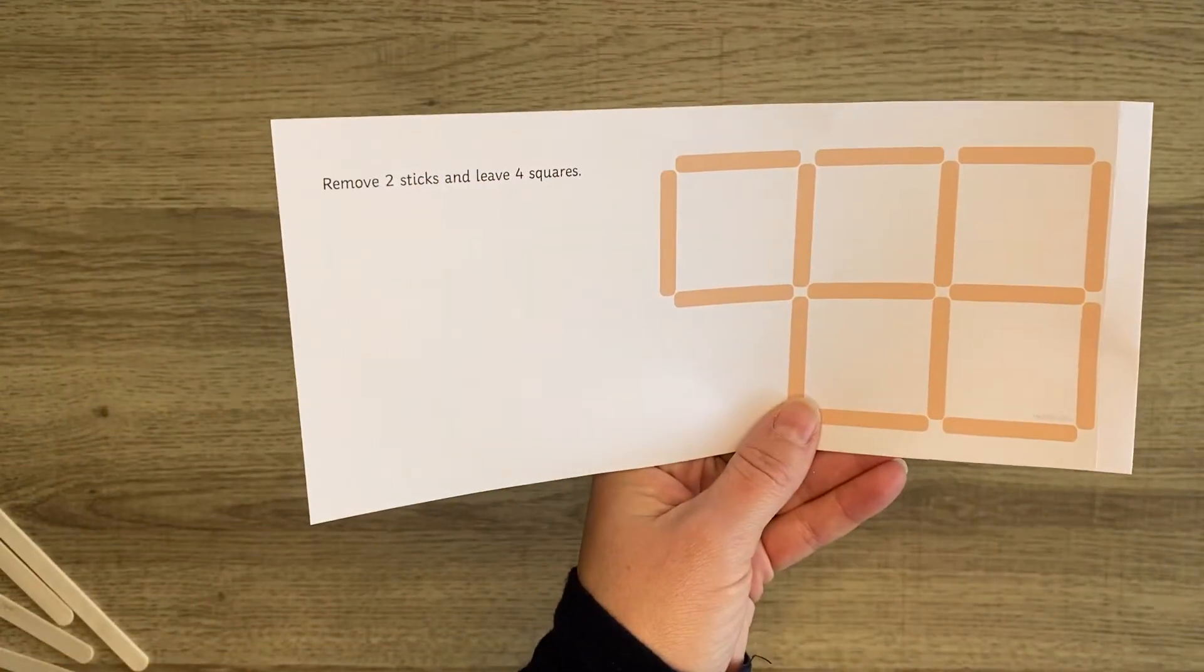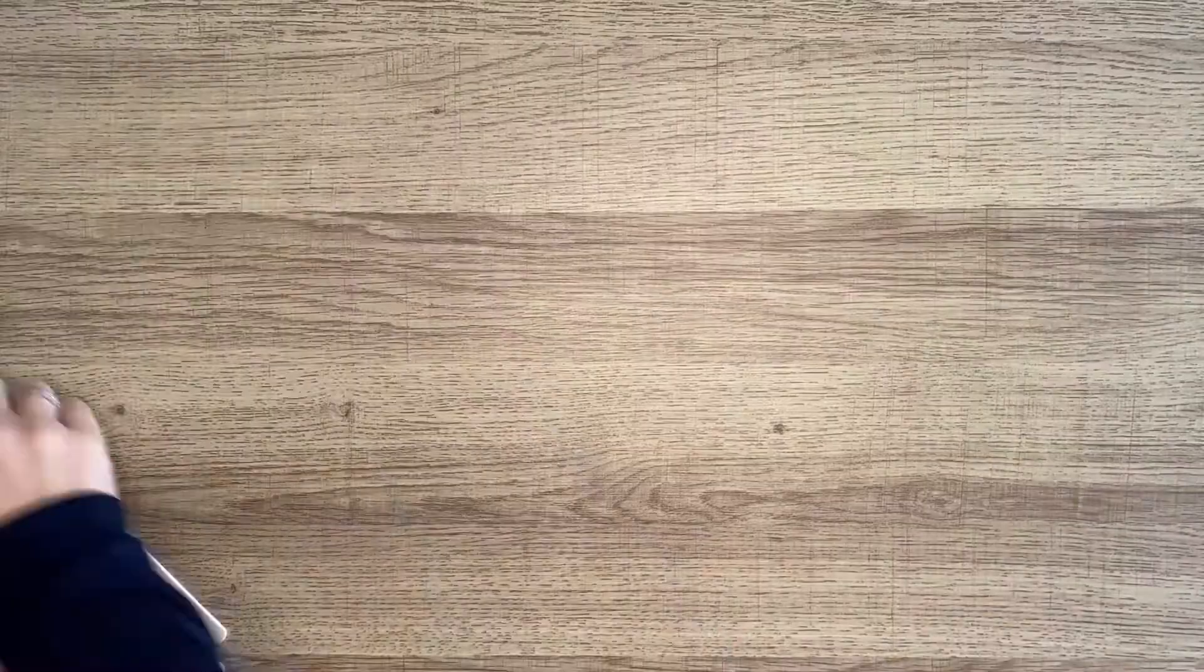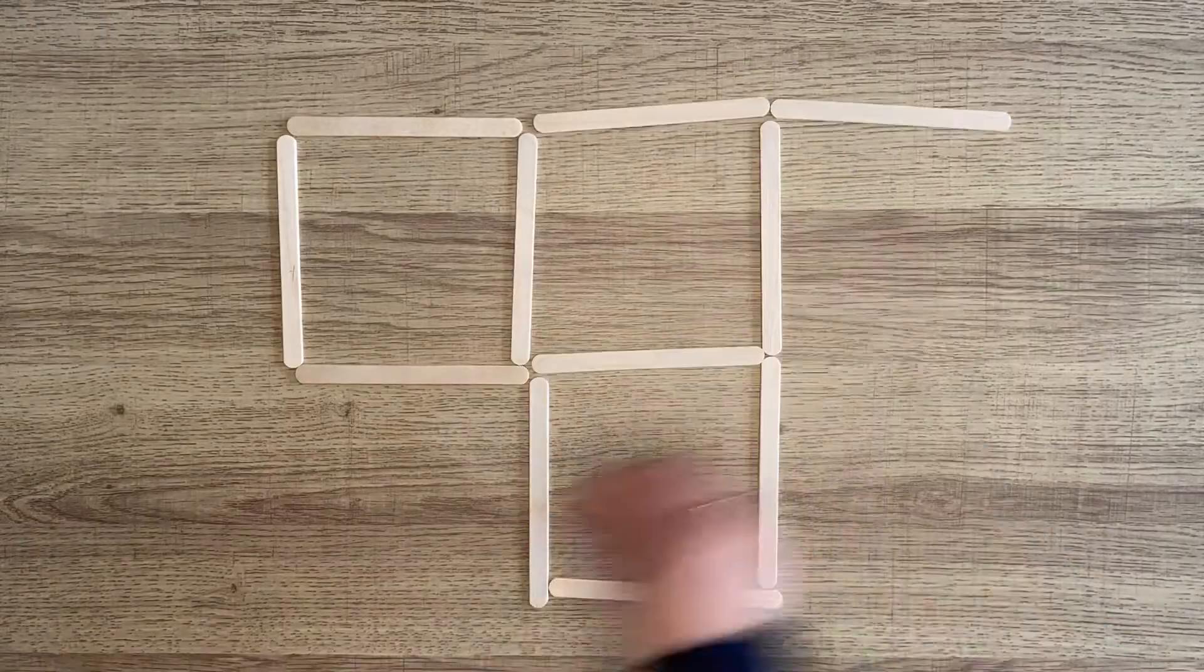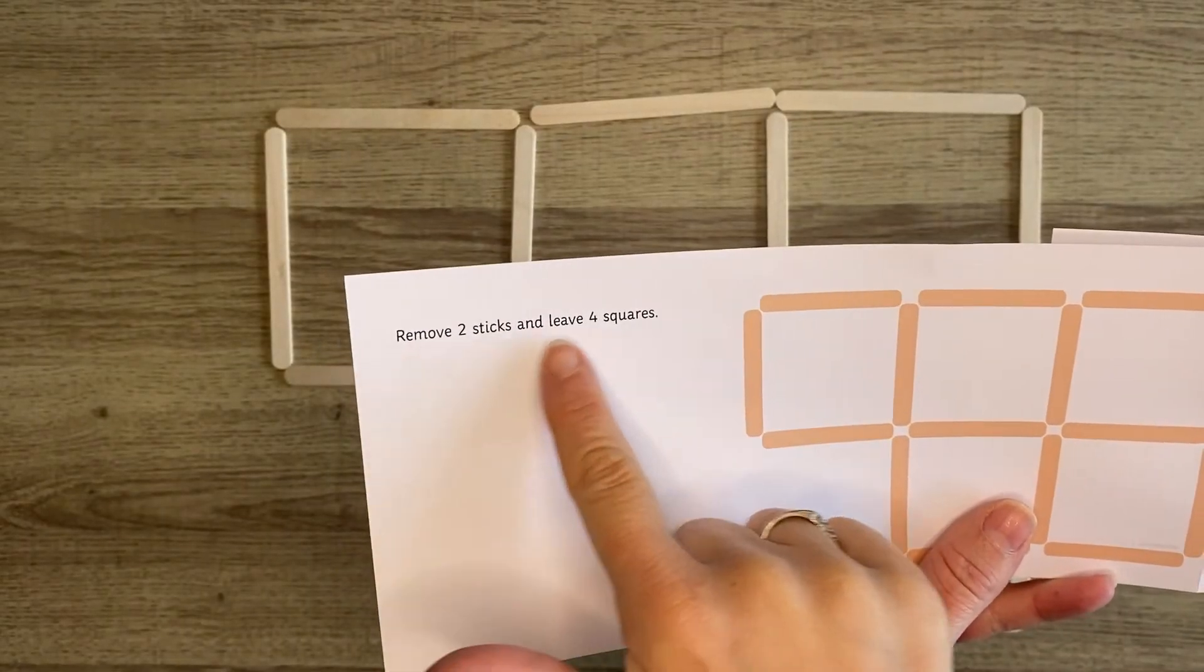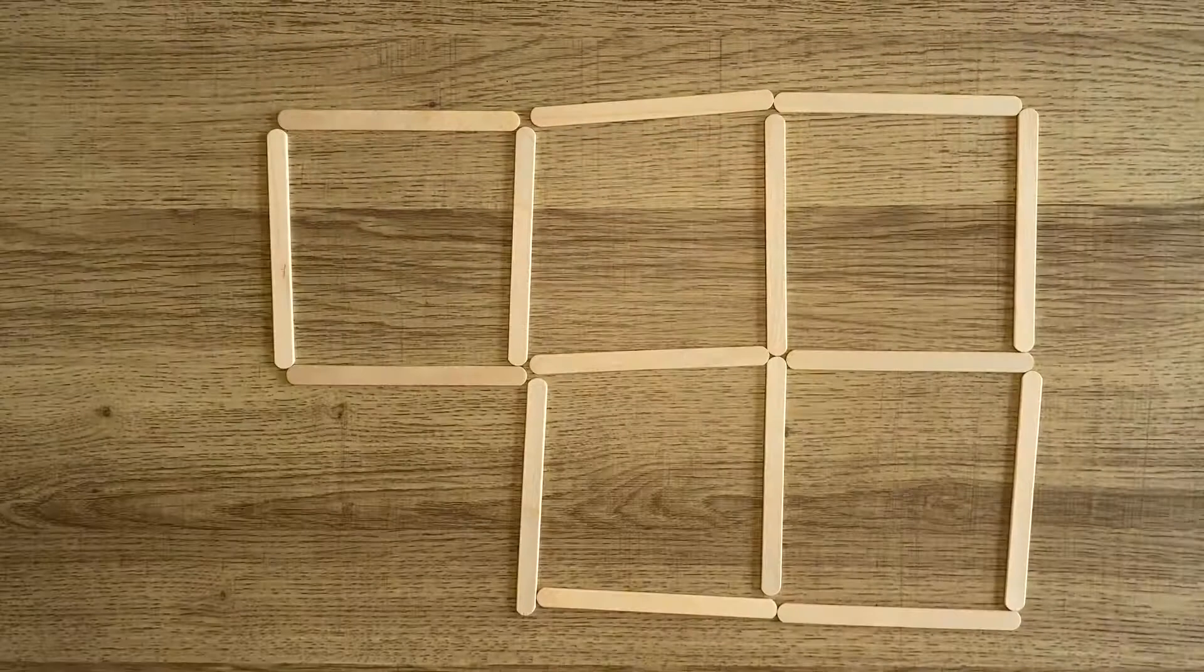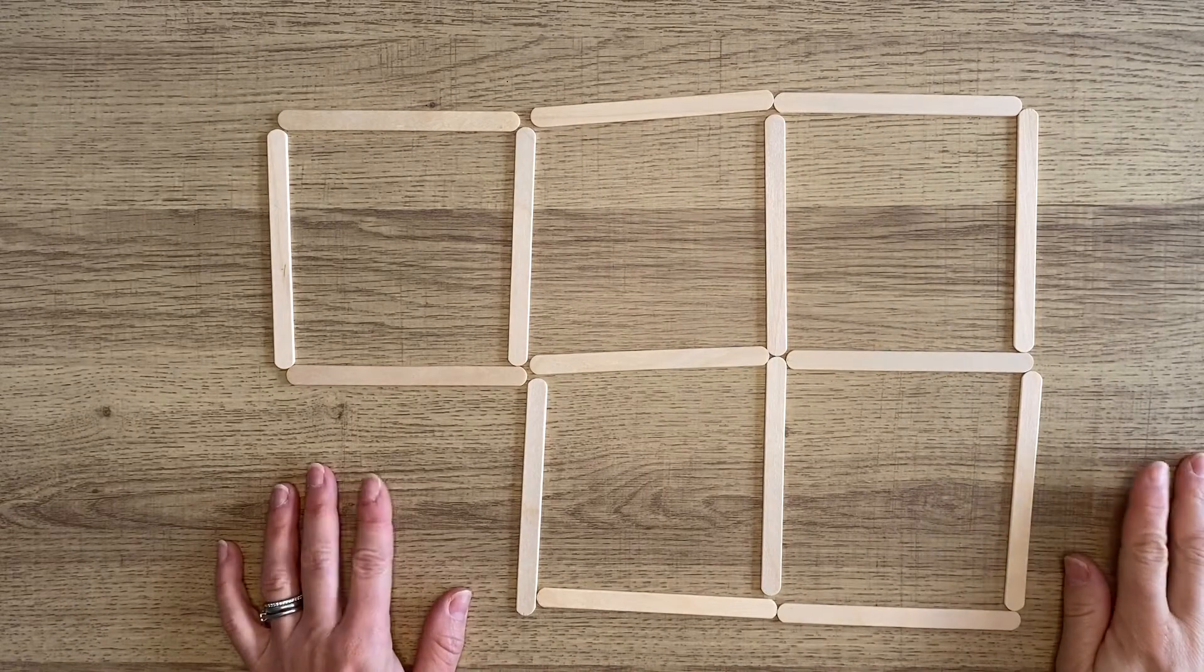We have some puzzles that children can do practically. This 2D shape puzzle activity pack focuses on squares. It ensures that children have to use their critical thinking to work out the solutions.